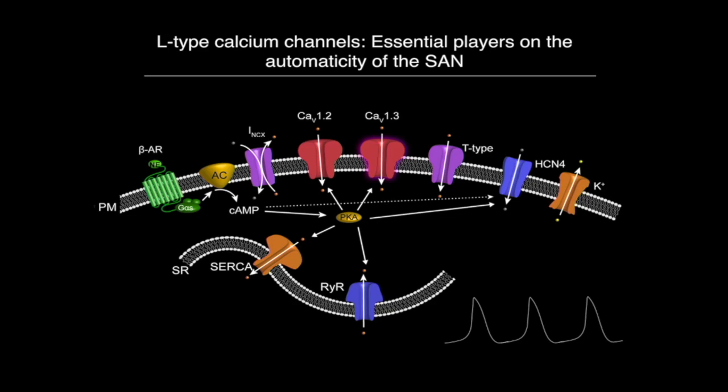Inside the cells, pacemaker cells have beta-1 and beta-2 adrenergic receptors that activate the production of cyclic AMP under the presence of adrenaline. This leads to activation of PKA and phosphorylation of many of the ion channels important for pacemaking, allowing the cell to enhance the activity of all these proteins and go from a resting heart rate to an accelerated heart rate.